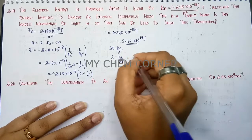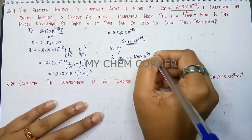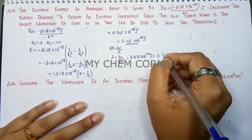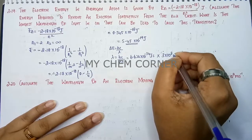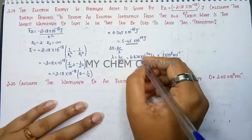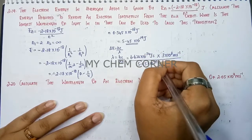Now, when you substitute this, H is Planck's constant. So 6.626 times 10 to the power minus 34 Joule second into C is going to be 3 into 10 to the power 8 meter per second by energy is going to be 5.45 times 10 to the power minus 19 Joule.